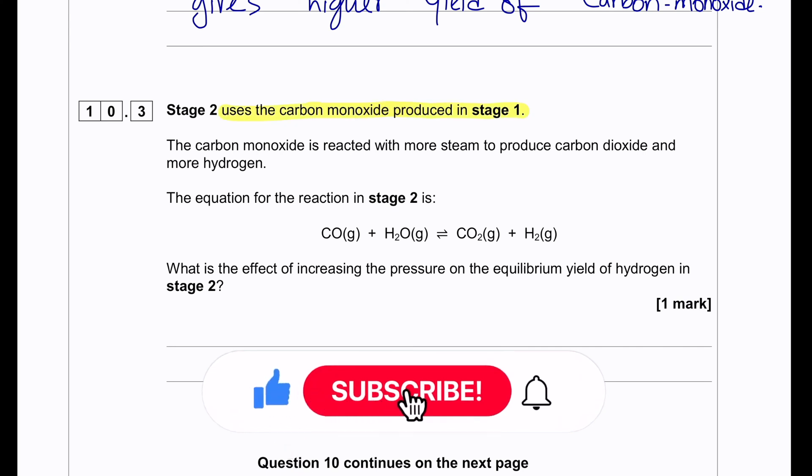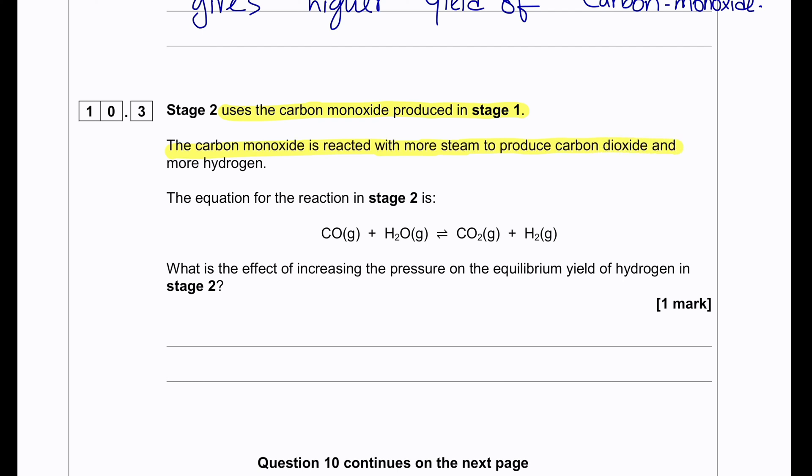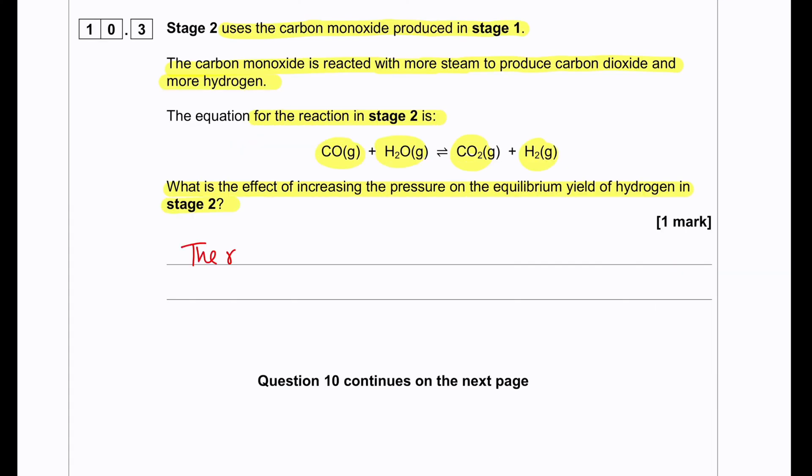Stage 2 uses the carbon monoxide produced in stage 1. Carbon monoxide is reacted with more steam to produce carbon dioxide and more hydrogen. The equation for stage 2 is given: carbon monoxide reacts with steam to produce CO2 and hydrogen. What is the effect of increasing the pressure on the equilibrium yield of hydrogen in stage 2? Since both sides have the same number of moles of gas, there will be no effect on yield by increasing the pressure.